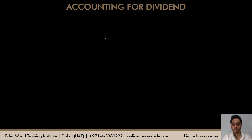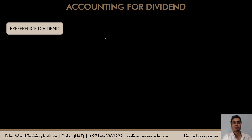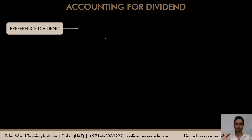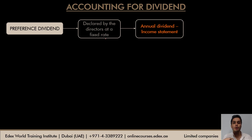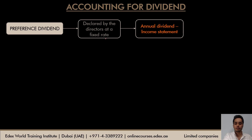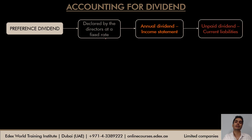Dividend must first be paid to preference shareholders — the preference dividend — at a fixed rate, before any dividend can be paid to other shareholders. Directors declare or pay the preference dividend at the fixed rate from annual profits, and it is transferred to the income statement under non-operating expenses to arrive at net profit. Any unpaid preference dividend at year-end is presented under current liabilities of the balance sheet.